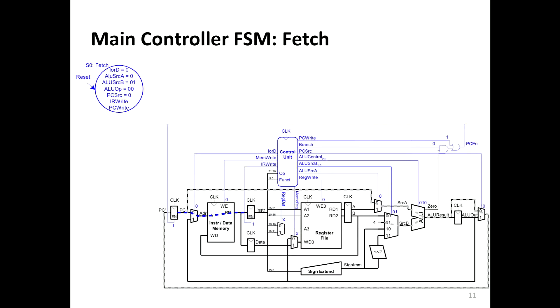Other control signals need to be enabled similarly. In the fetch state, we're not writing to memory — we're reading — so the write signal had better be zero. We want to write to the instruction register so that at the end of the state, the instruction is moved into that register. Some control signals can be don't-cares — for example, if we're not using part of the data path in the fetch state, we don't care about those signals as long as we don't do damage.